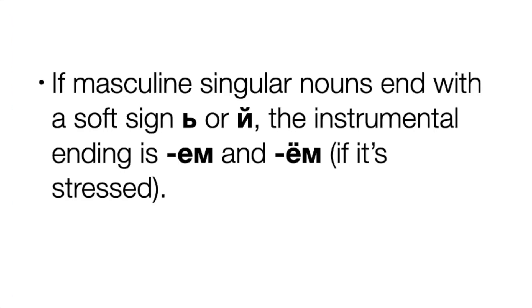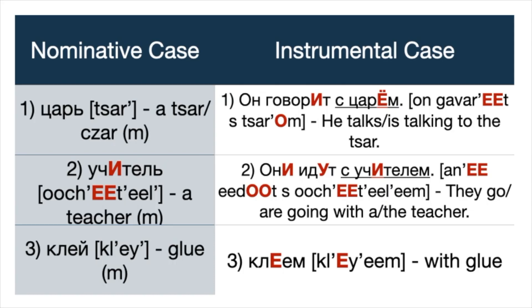If masculine singular nouns end with a soft sign, the instrumental ending is -ем or -ём if it's stressed. Only a dictionary helps you understand whether it's stressed or not. Number one: царь — masculine noun → царём. Example: Он говорит с царём — He talks to the czar. Number two: учитель — masculine noun. Example: Они идут с учителем — They are going with the teacher. Number three: клей — glue → клеем — with glue.